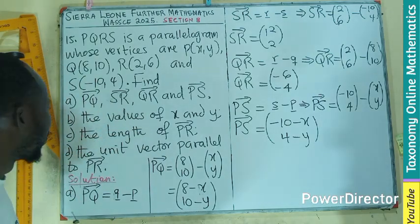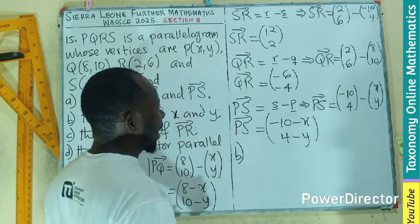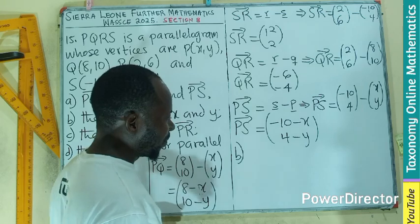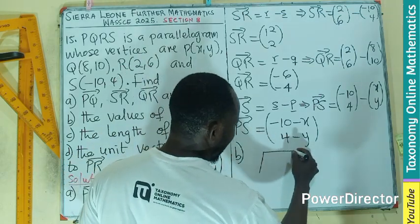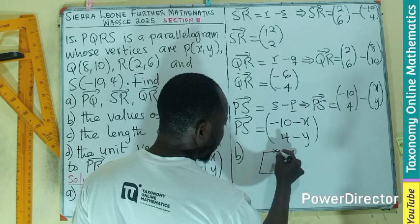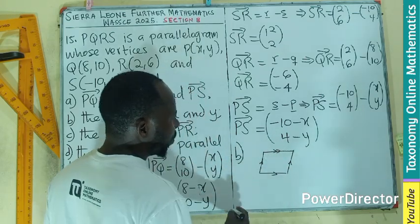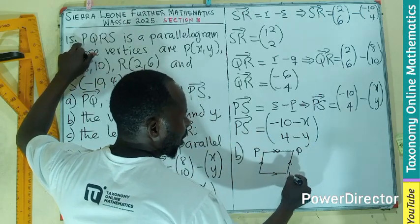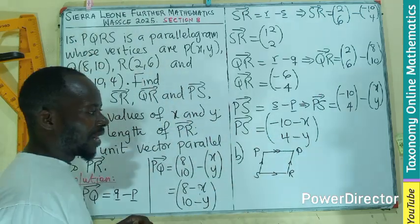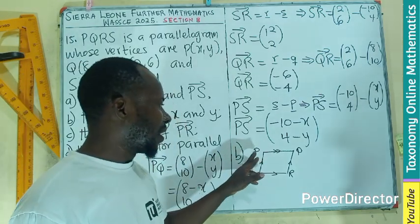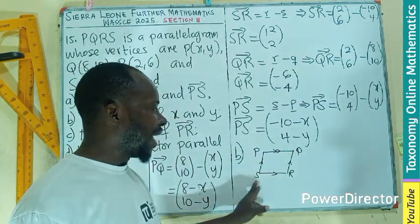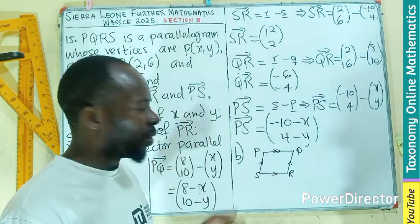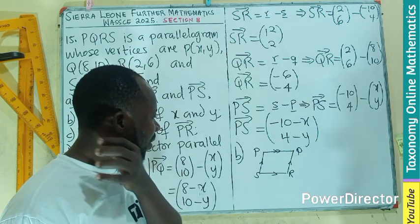The second part is to find the values of X and Y. To find that, we have to keep in mind, I'm going to make a sketch. If I have my parallelogram in this form, starting with P, Q, R, S, that means that vector PQ is equal to vector SR. Because it is a parallelogram, the opposite sides are equal and parallel.